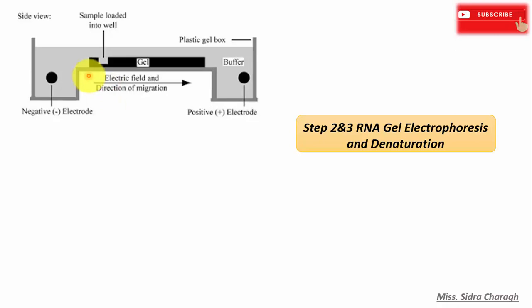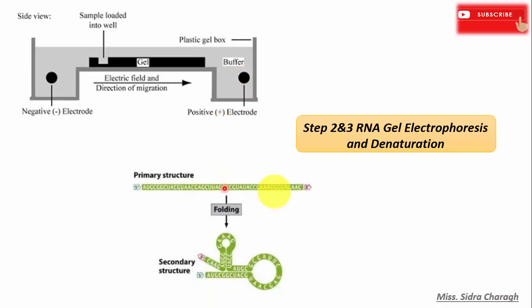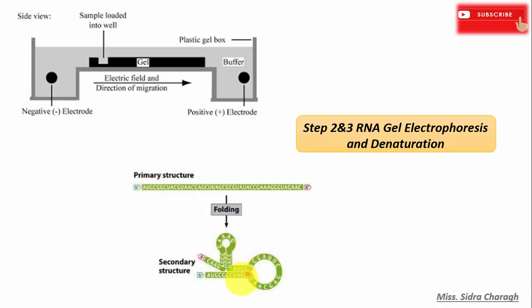In RNA gel electrophoresis, RNA molecules are separated according to size. RNA molecules are negatively charged, so they move from the negative electrode to the positive electrode during gel electrophoresis. Although RNA is single-stranded, we include a denaturation step because RNA molecules fold onto themselves and form secondary structures. To separate them by molecular weight, we need to bring them to a linear shape; otherwise, secondary structures will affect their electrophoretic mobility.